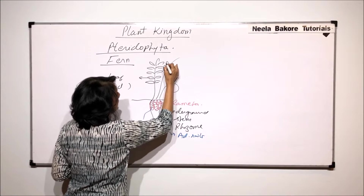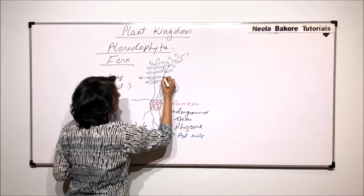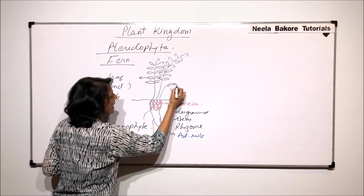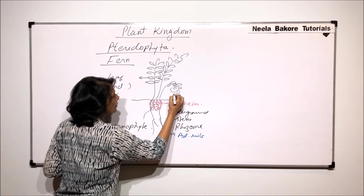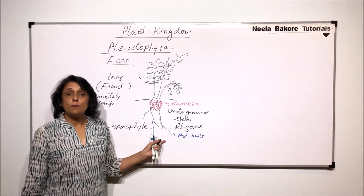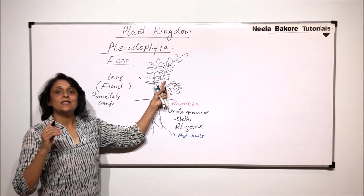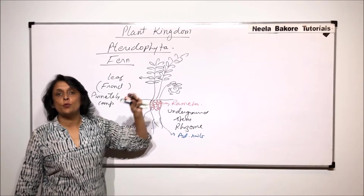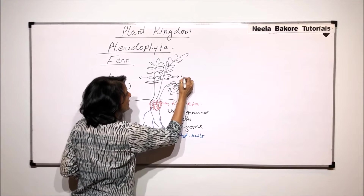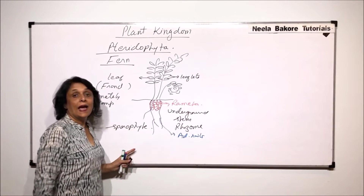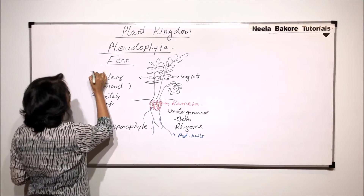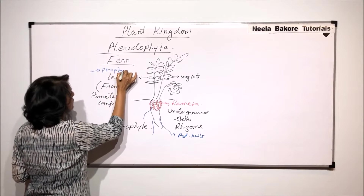These leaves are larger leaves, which is why the fern is placed under macrophyllous pteridophytes. The younger leaves have fronds which are coiled or folded. During the reproductive season, on the underside of the leaf, spore-producing structures are formed. The leaves, because they are going to produce spores, are called sporophylls.